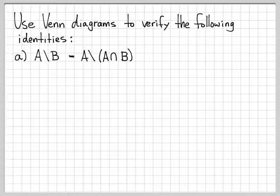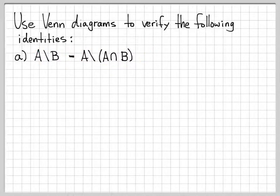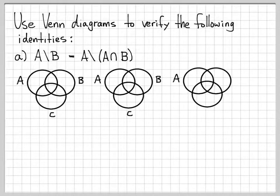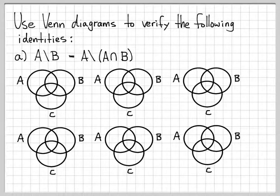When you use Venn diagrams to verify relationships like this, you might be tempted to just sketch one Venn diagram for this, sketch one Venn diagram for this, and then show that they're equal. That's not a horrible thing to do, but to really prove that these identities are true, constructing a sequence of Venn diagrams does a better job explaining that process.